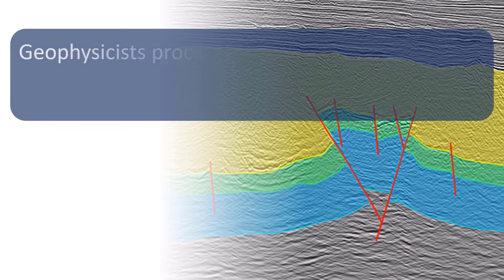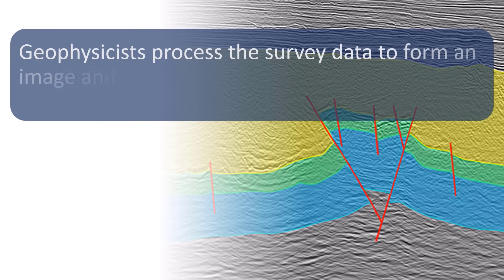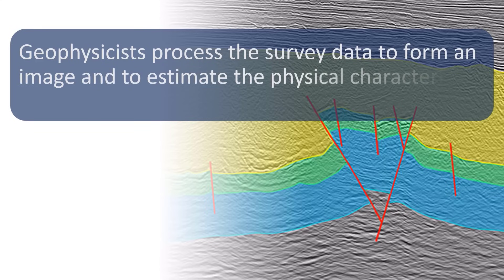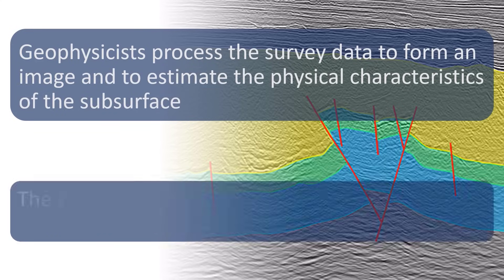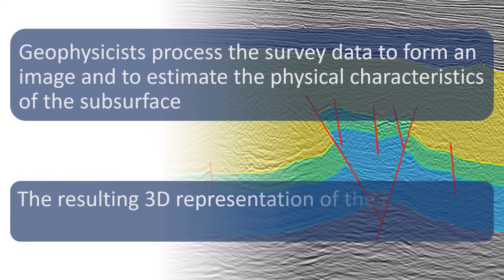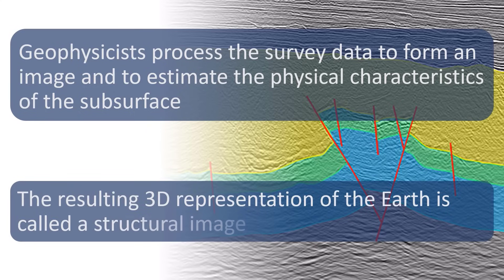Geophysicists process the survey data to form an image and to estimate the physical characteristics of the subsurface. The resulting 3D representation of the Earth is called a structural image.